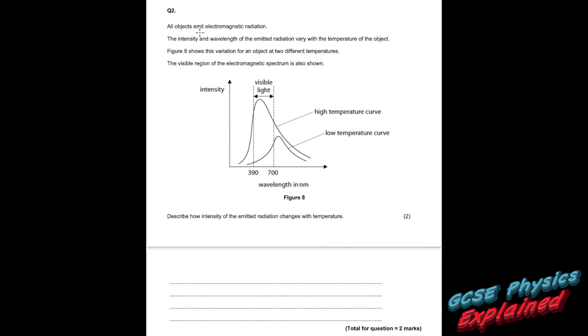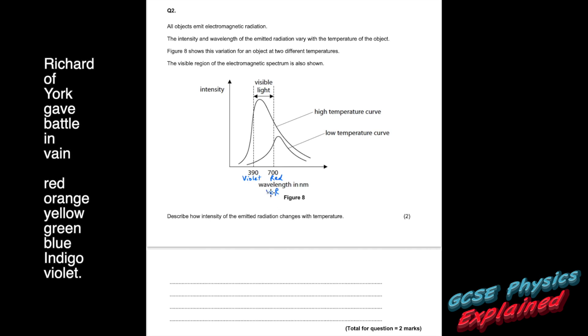Question 2. All objects emit electromagnetic radiation. The intensity and wavelength of the emitted radiation vary with the temperature of the object. Figure 8 shows the variation for an object at two different temperatures. The visible region of the electromagnetic spectrum is also shown. So red light is 700 nanometers and violet is about 390. That's Richard of York gave battle in vain.